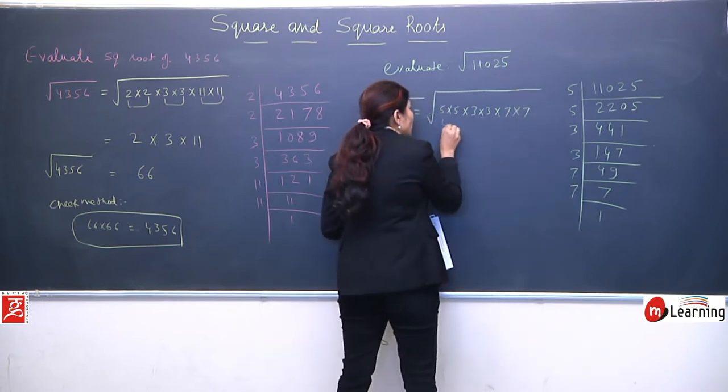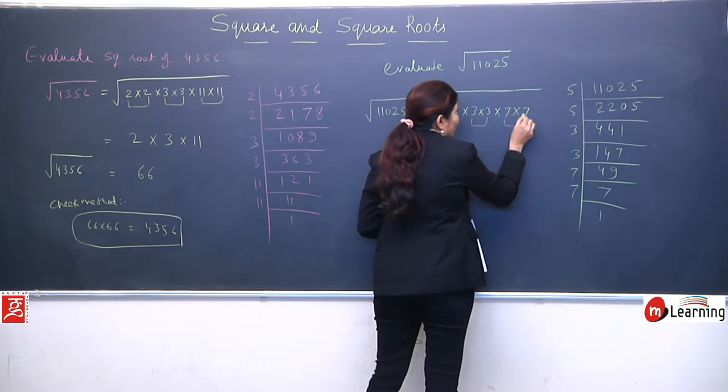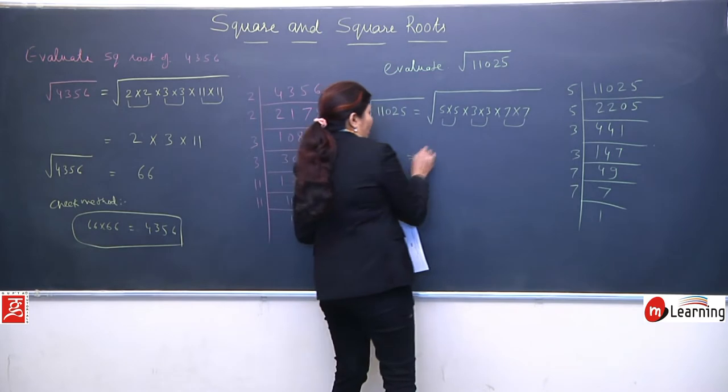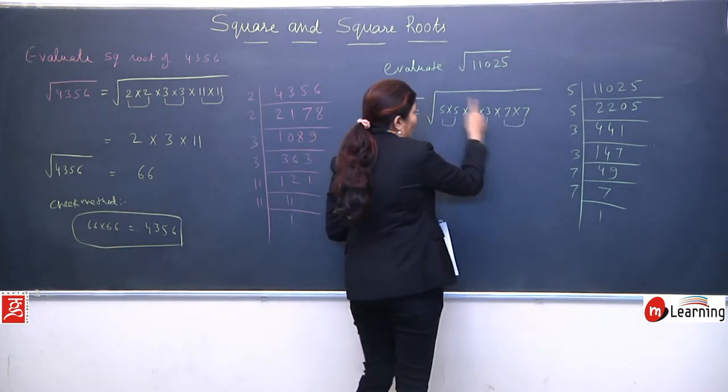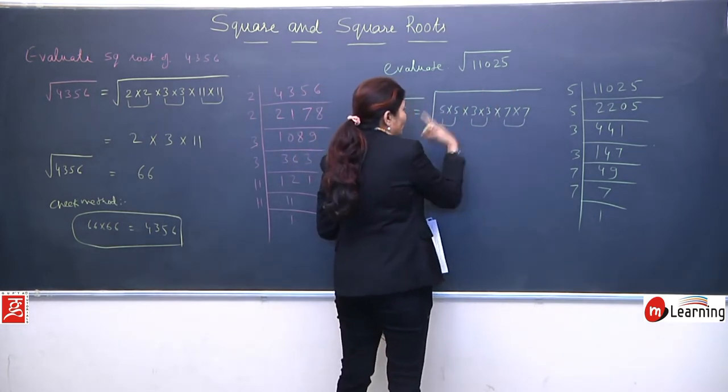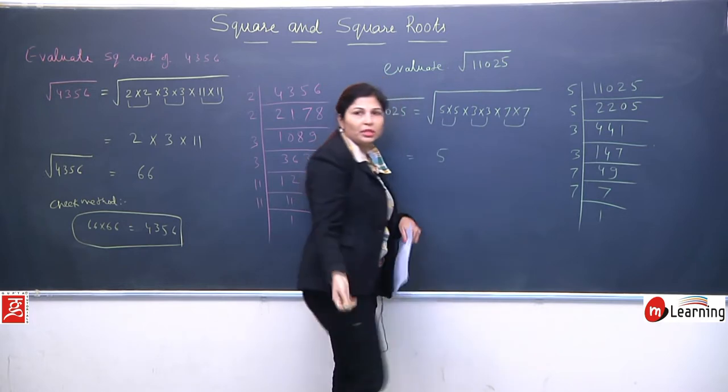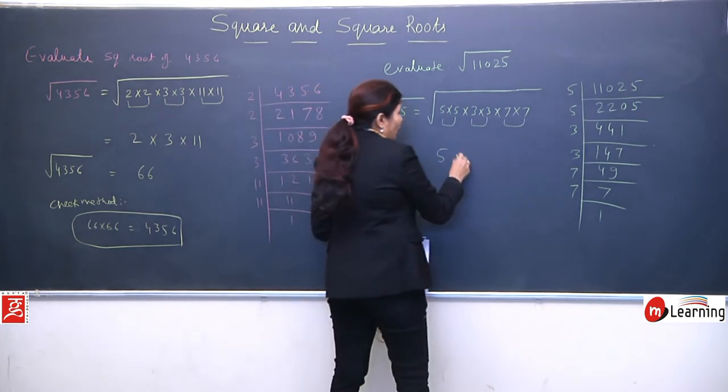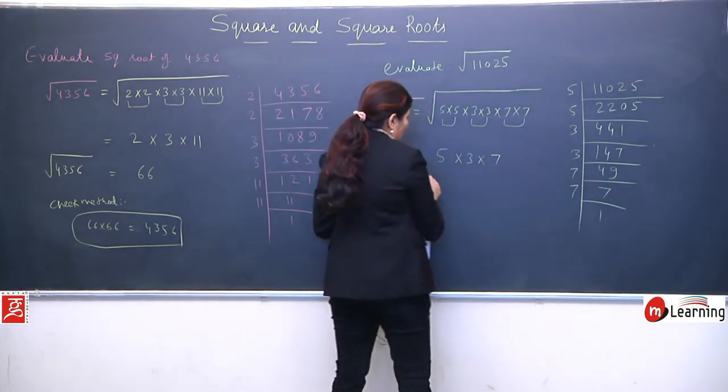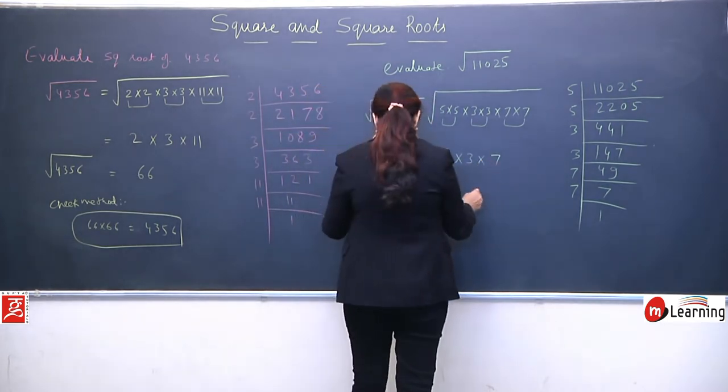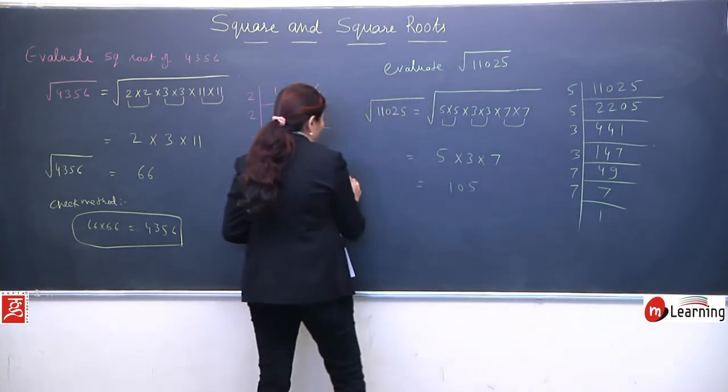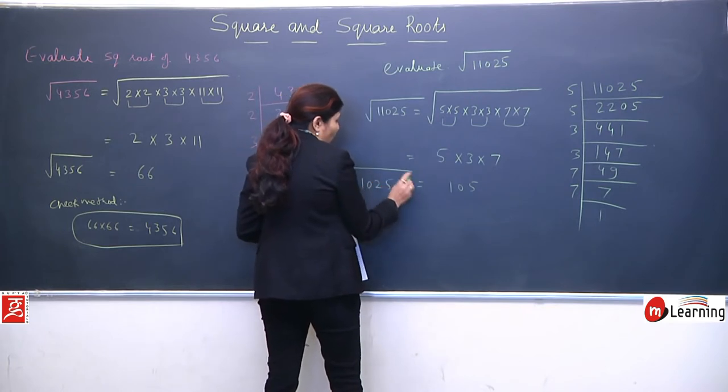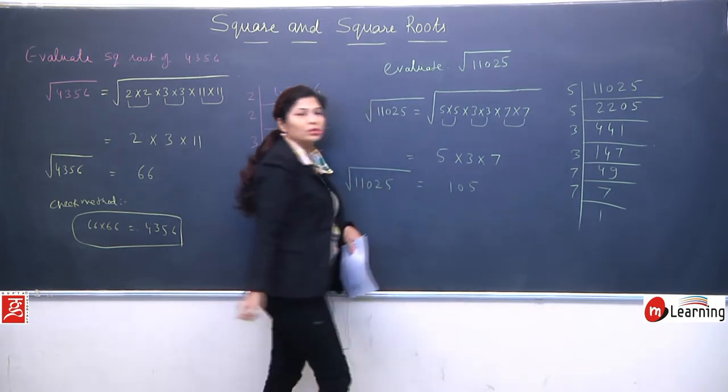11025 is equivalent to 5 into 5, 3 into 3, and 7 into 7. So far in all the questions we're taking, we're getting equivalent prime factors, means we're easily getting pairs. Make these pairs, remove the square root cap. Take out one 5 from this square root, take out 3 and take out 7. Multiply them, so your answer will be 105.